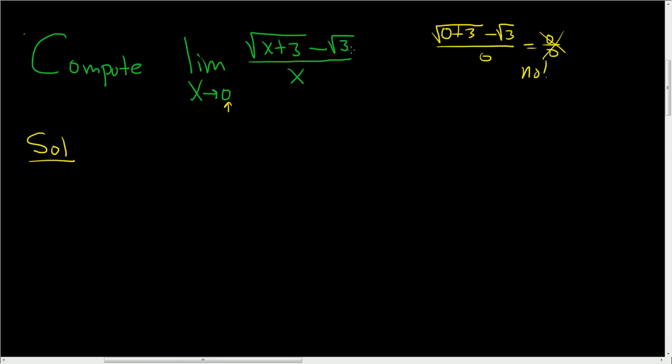The approach that jumps out at you after you do a couple of these is to rationalize the numerator. Whenever you have a square root minus something else, rationalizing the numerator is usually a good first bet. So let's rewrite the whole thing one more time: square root of x plus 3 minus the square root of 3, and then here we have x.